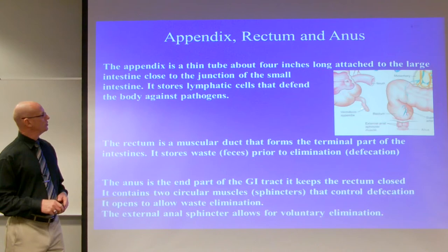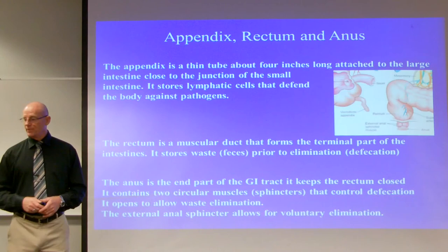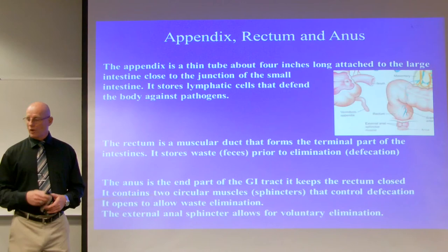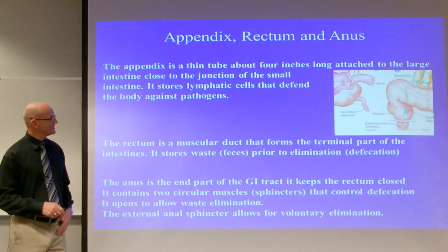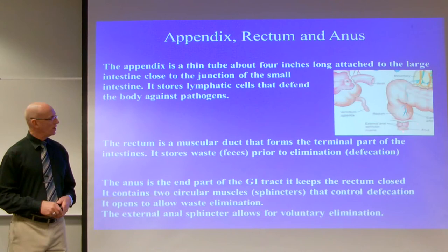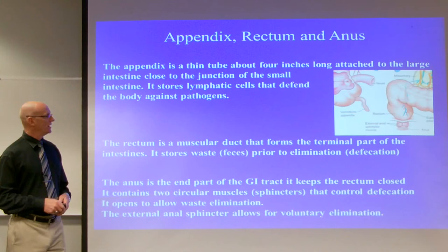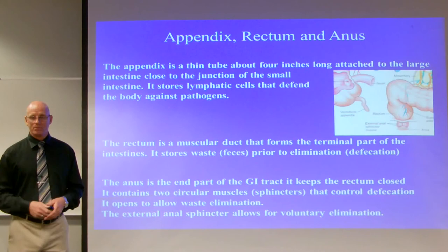The appendix is a thin tube about four inches long attached to the large intestine, close to the junction of the small intestine. It stores lymphatic cells that defend the body against pathogens. The rectum is a small muscular duct that forms the terminal part of the intestines — it stores waste feces prior to defecation. The anus is the end part of the GI tract; it contains two muscular sphincters that control defecation. The interior one is involuntary, and the exterior anal sphincter is a voluntary muscle you can control.